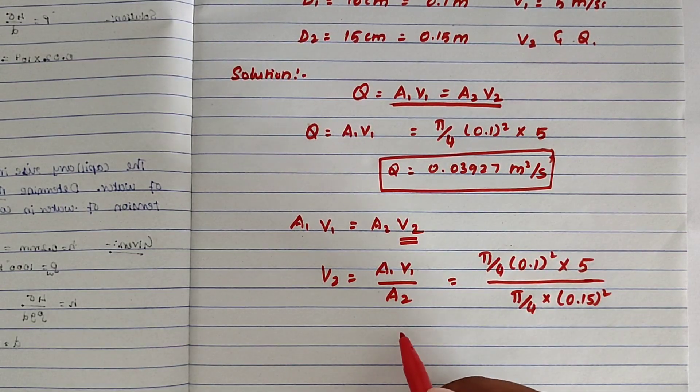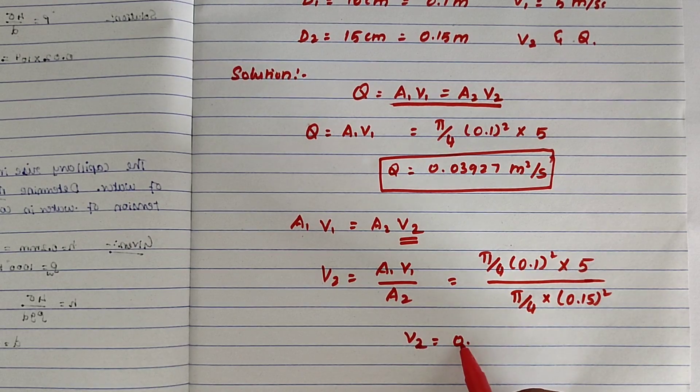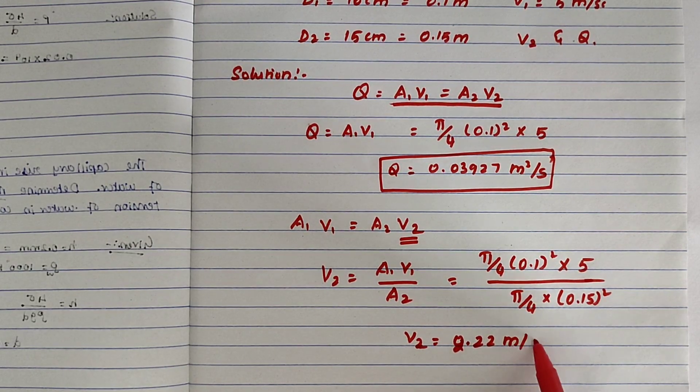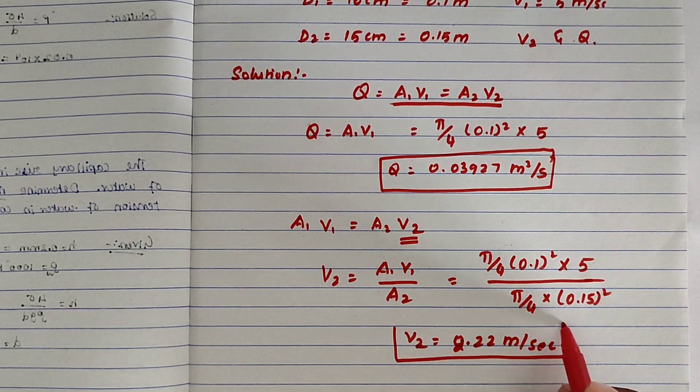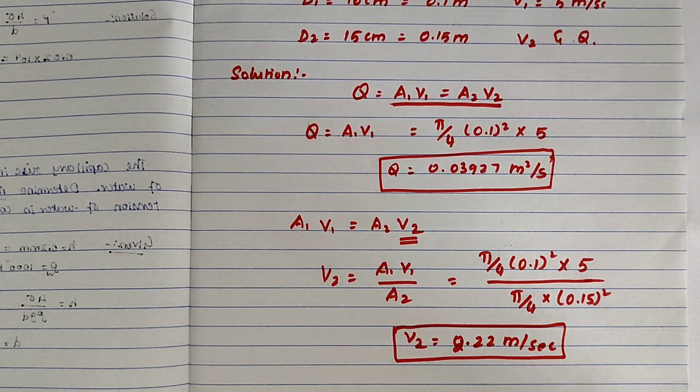Solving this, we get the value of V2 equal to 2.22 meter per second. This is the V2 value.